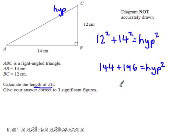So 144 plus 196 is 340, which is the hypotenuse squared.